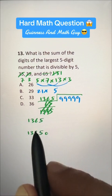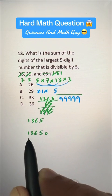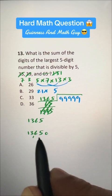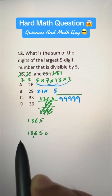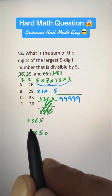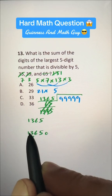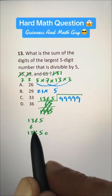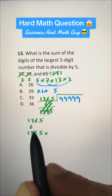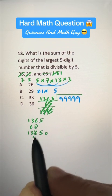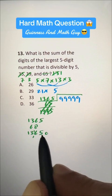And half of this will be 1365 times 5, right? So, this is 13650, half of 13 is 6, 2 times 6 is 12, and we have 1 remainder, so 16, 2 times 8 is 16, and we have 50 here, so 2 times 25 is 50.